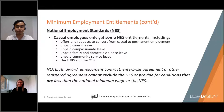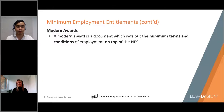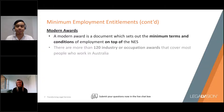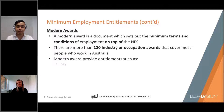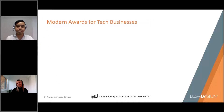We'll now move to discussing modern awards, which are another source of minimum employment entitlements. A modern award is a document which sets out the minimum terms and conditions of employment on top of the NES. There are more than 120 industry or occupational awards that cover most people who work in Australia. Modern awards provide entitlements such as minimum rates of pay, breaks, allowances, penalty rates and overtime rates. There are a few modern awards relevant for tech businesses, including the Professional Employees Award, the Clerks Private Sector Award and the Miscellaneous Award.